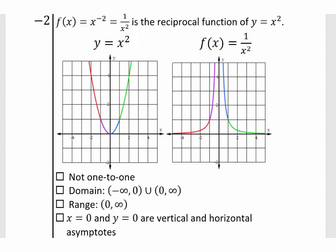So again, x equals zero and y equals zero are your asymptotes. The original function was not one-to-one, and neither is the reciprocal function. The domain of the reciprocal function is broken at zero — you cannot have 1 over zero, so x equals zero is not part of the domain. The domain is negative infinity to zero and zero to infinity. The range became zero to infinity, since we cannot achieve zero but can get closer and closer to it. So x equals zero and y equals zero are your vertical and horizontal asymptotes.